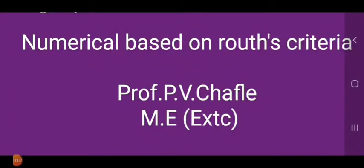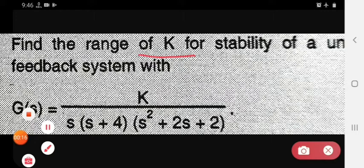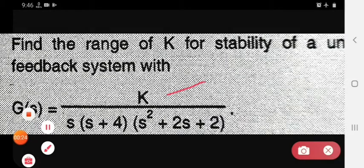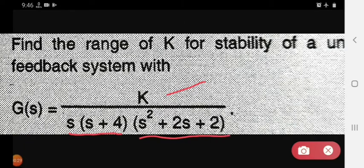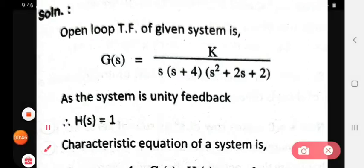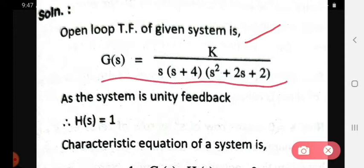Today we solve a numerical based on Routh's criteria. The problem is: find the range of K for the stability of a unity feedback system where G(s) equals K divided by s(s+4)(s²+2s+2). The open loop transfer function of the system is G(s) = K / [s(s+4)(s²+2s+2)].